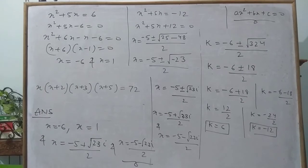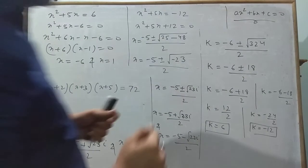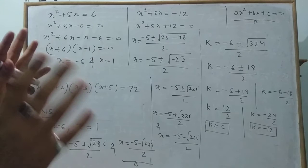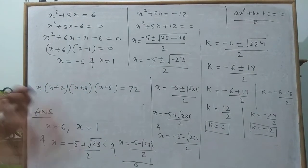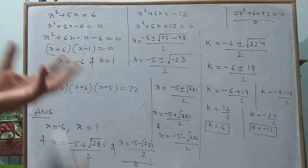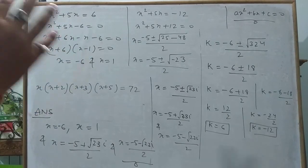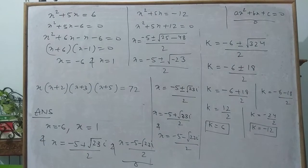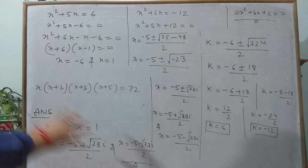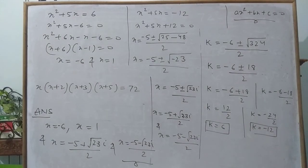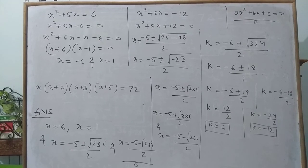This is the way we can solve this type of problem. Whenever four brackets appear in product form: first check the coefficient of x — if it is 1 it's good, if not make it 1. Then find two pairs whose constant sums or differences are equal, keep each pair in brackets, multiply, substitute a new variable k, and simplify. I hope this concept is clear. We will give questions in the worksheet so you can try to solve this kind of problem.